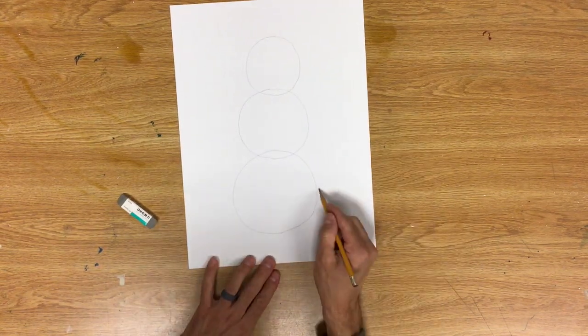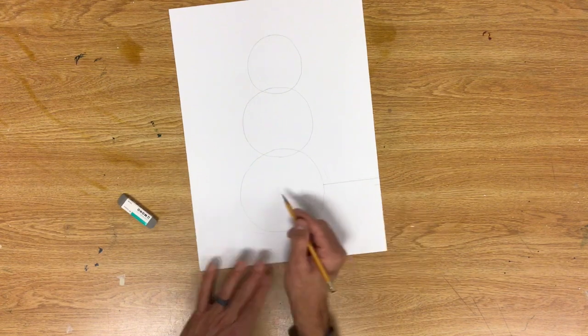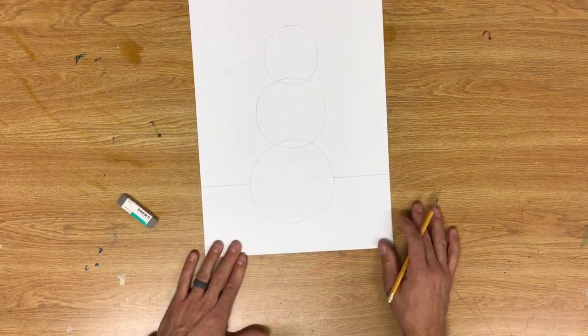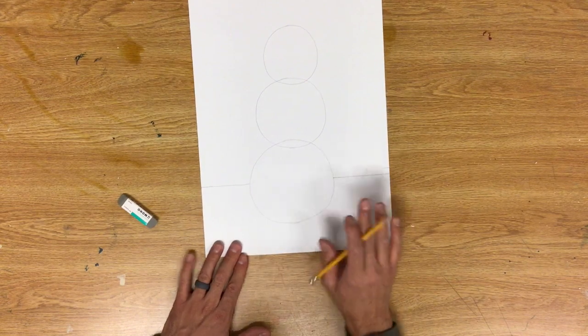That's all I really need to start. I'm going to try to draw a horizon line. Basically a straight line going behind my snowman to let you know that he's sitting on the ground.